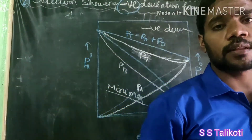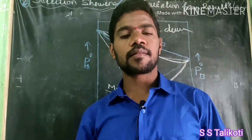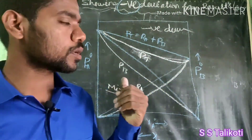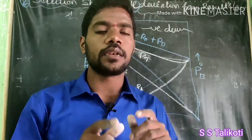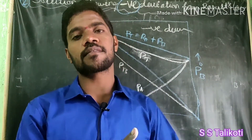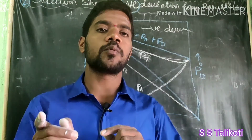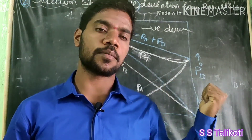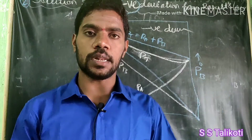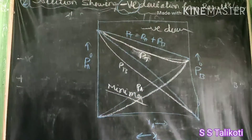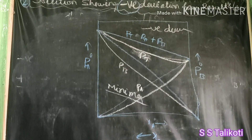Non-ideal solutions are classified into two types: solution showing positive deviation from Raoult's law, and solution showing negative deviation from Raoult's law. Today's class I discussed these two. In the next video, I will discuss the difference between positive deviation and negative deviation from Raoult's law. Thank you for watching — if you have any doubts, please comment.